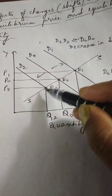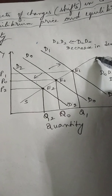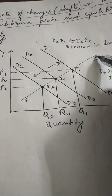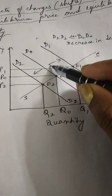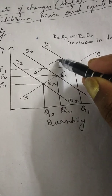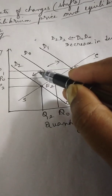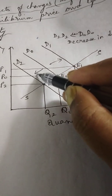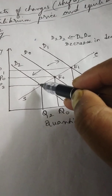The supply curve SS remains the same. Only the demand curve changes — that means either shifts to the right as indicated by this arrow, or shifts to the left as indicated by this leftward arrow.